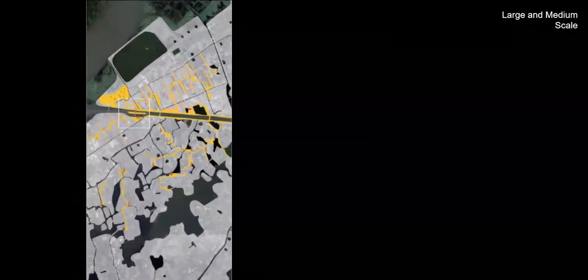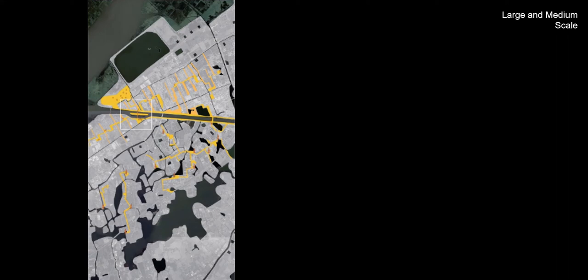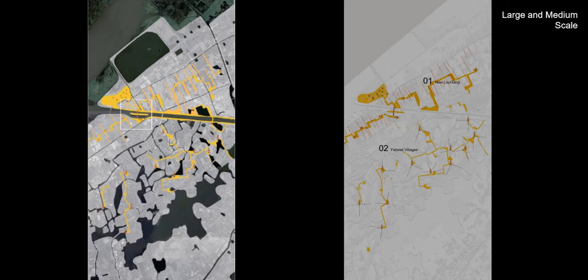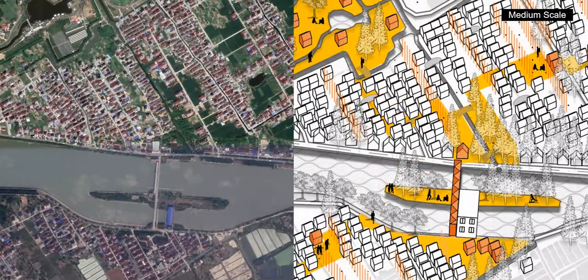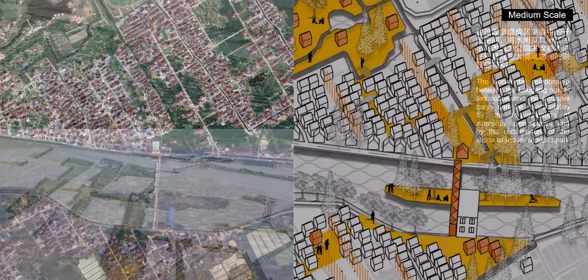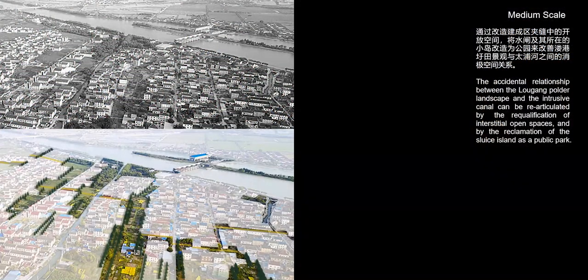The first transect, for instance, shows how the reactivation of the ancient Logang polder system, the reconnection of ancient fishing villages, and the reclamation of water infrastructures into public spaces can all contribute to restore a dialogue between Taipu Canal and its immediate context. The accidental relationship between the Logang polder landscape and the intrusive canal can be re-articulated by the reclamation of institutional open spaces and by the reclamation of the Sluice Island as a public park.